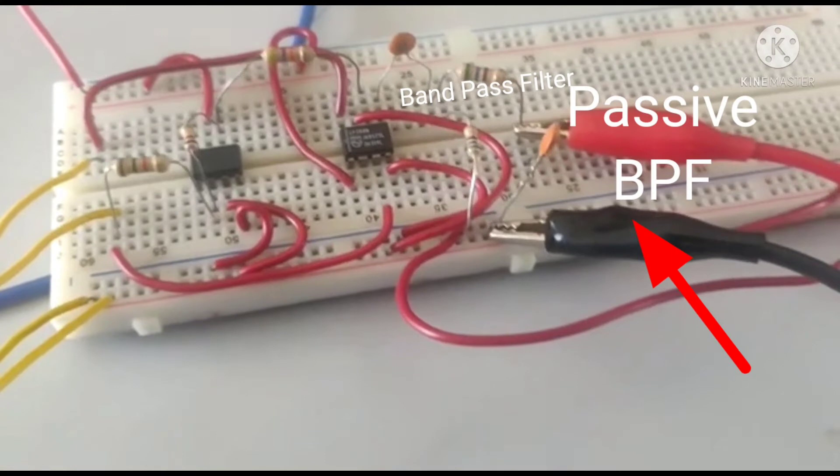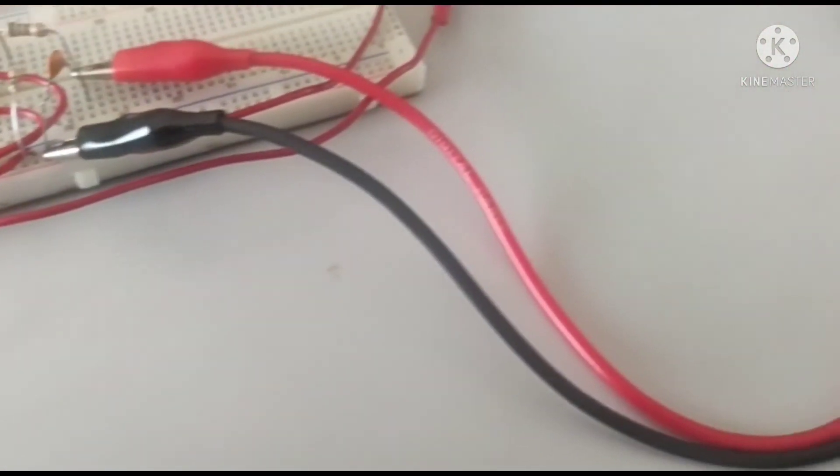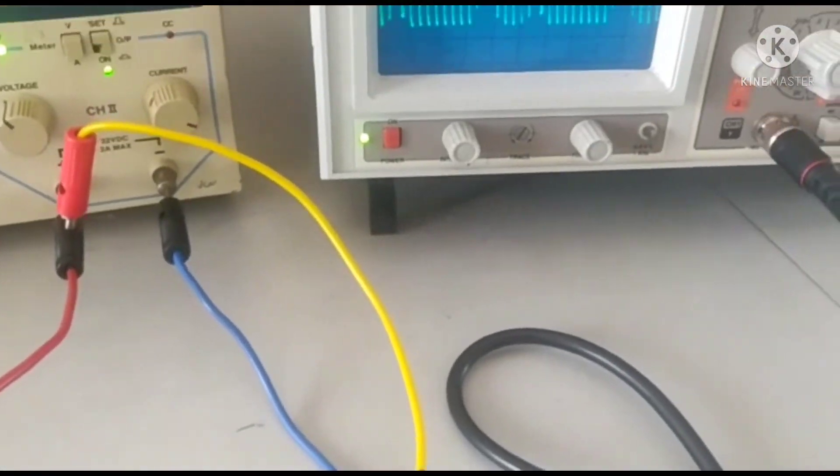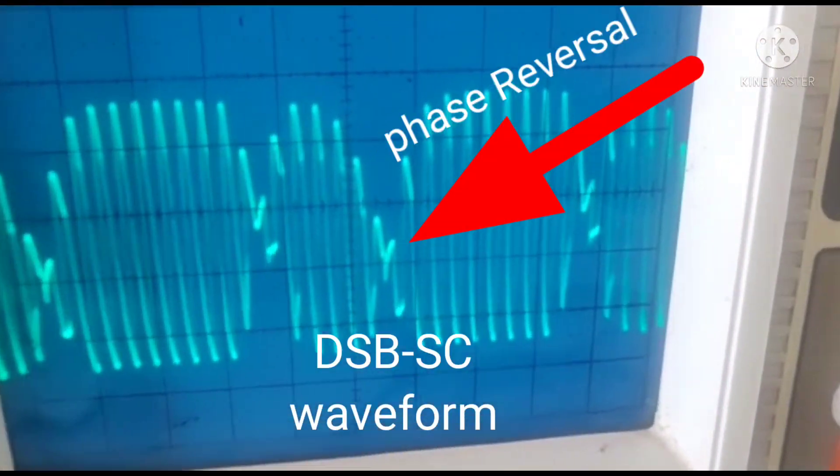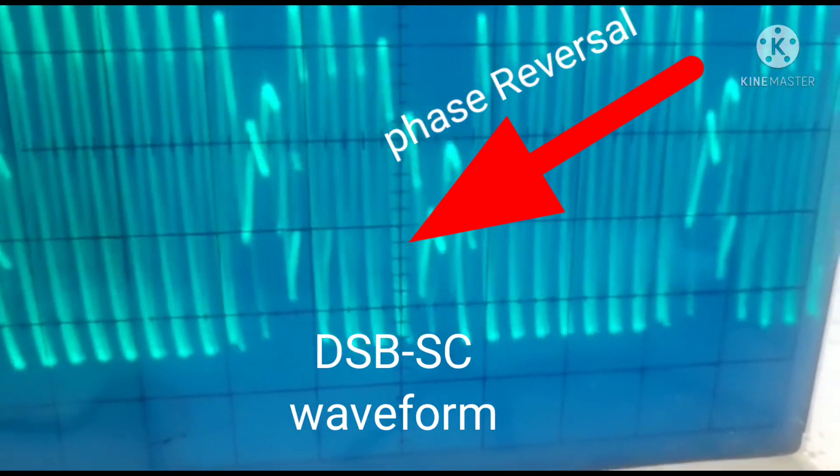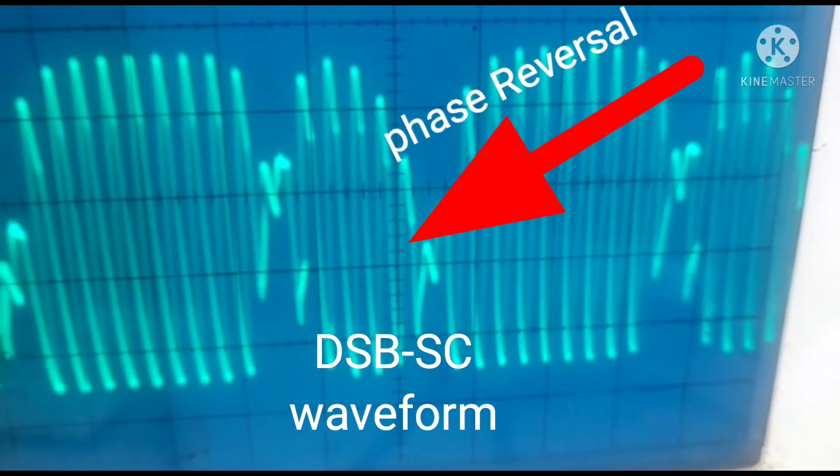passive band pass filter is required to see the output at the end on CRO. Now observe on the CRO, DSB-SC is generated. Isn't it? So simple. Observe the phase reversal here.